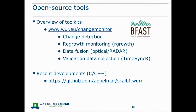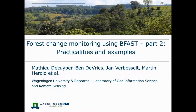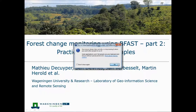As a quick summary, an overview of the toolkits is available at the Change Monitor webpage. We have toolkits for change detection like BFAST and BFAST Spatial, but also for regrowth monitoring (R-Growth), data fusion of optical and radar data, and validation data collection (TimeSync R). For the latest developments, such as C and C++ implementations of the BFAST package, you can find those on the GitHub page where the code and packages are available. I'd now like to pass the floor to Mathieu, who will talk more about BFAST practicalities and examples.